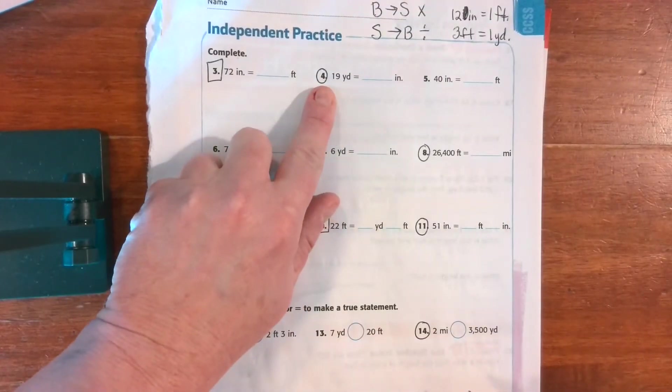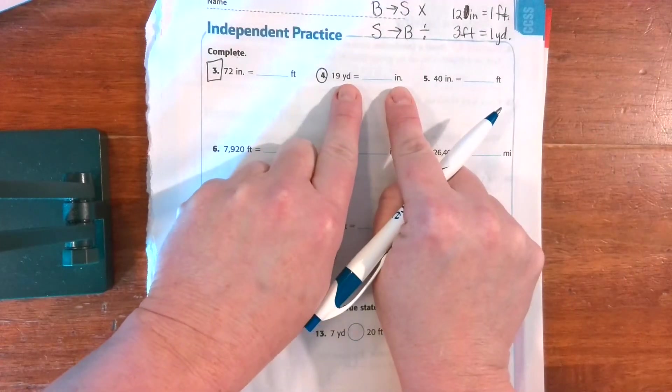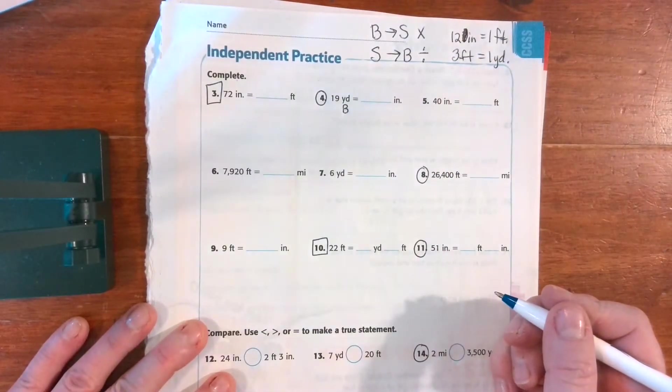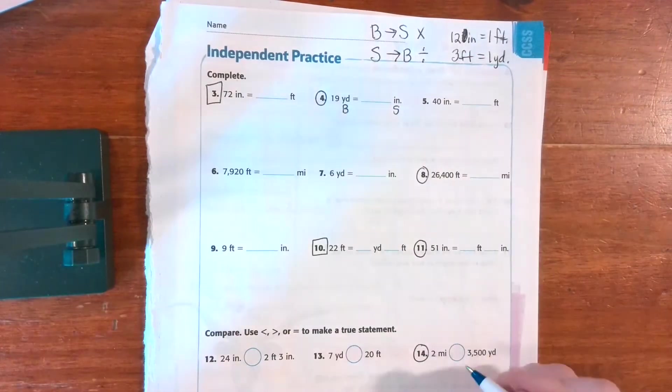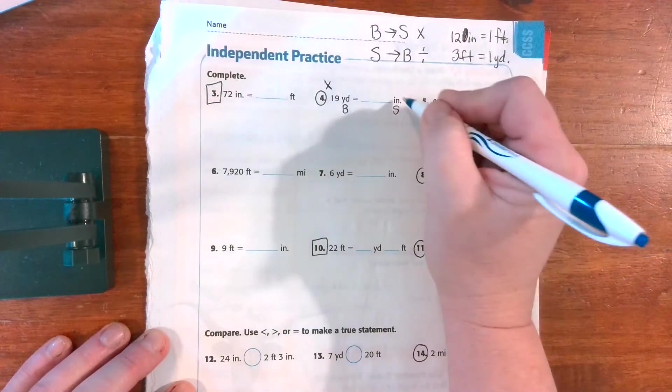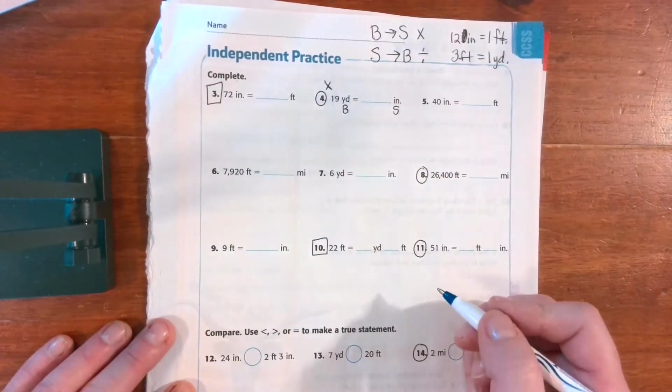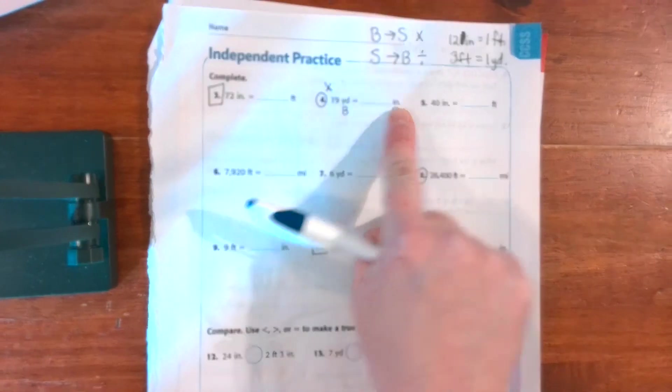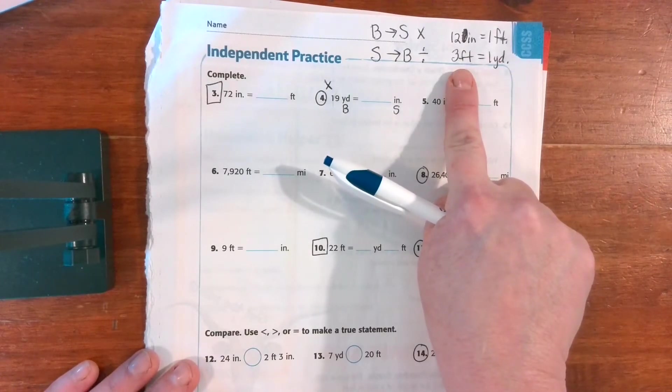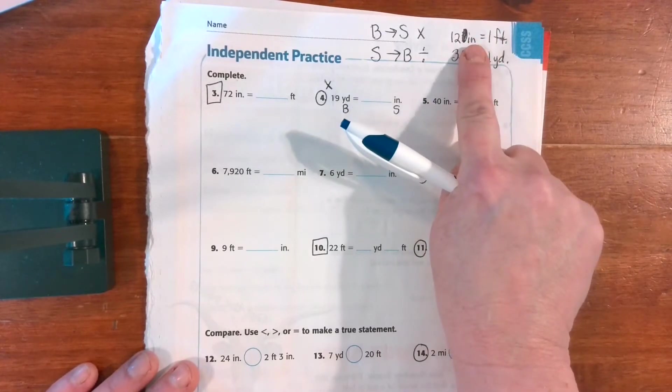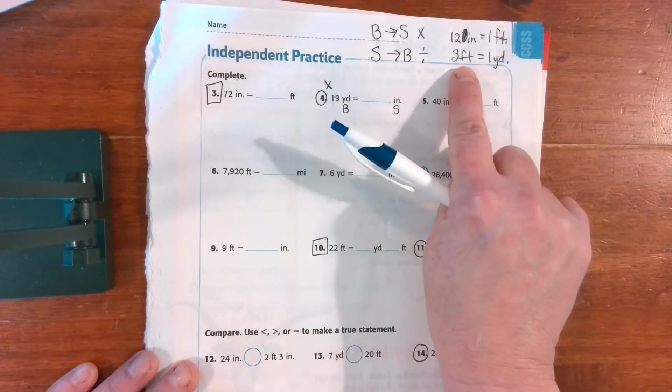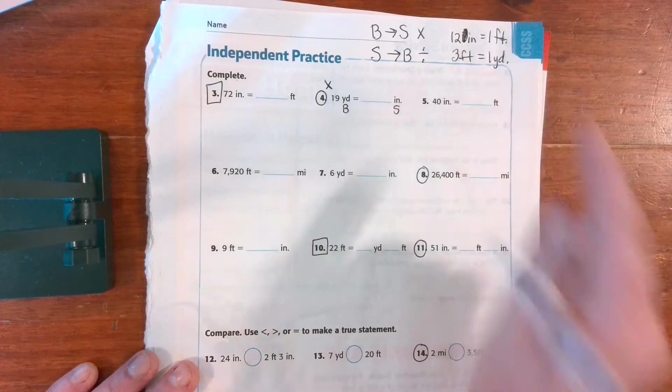All right, so we're on number four. I'm going yards to inches. Big to small or small to big? Well, yards is the biggest and inches is the smallest. So if I'm going big to small, I'm going to multiply because I know it's going to take more inches to make up my yards. So now I'm going to find yards and inches. I don't have yards to inches because I didn't memorize that one. I just memorized yards to feet. So we're going to start with feet and then we're going to go feet to inches. Sometimes it's a multi-step process.